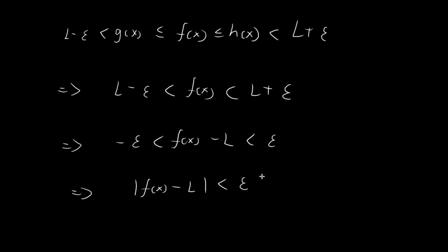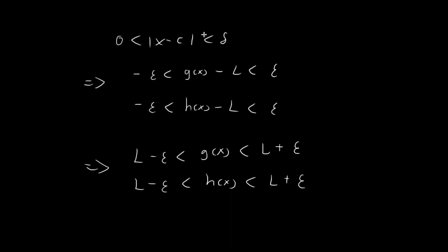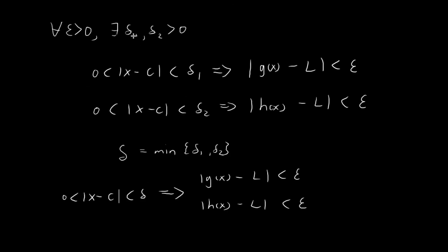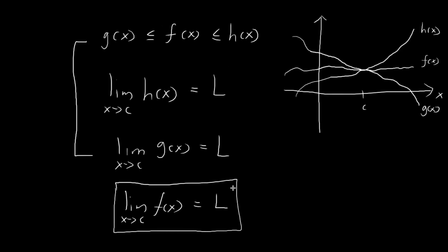This concludes our proof. We have just shown that for whatever arbitrary value of ε you come up with, we can indeed find a δ such that if |x − c| < δ, then it's implied that |f(x) − L| < ε, where δ is defined as the minimum of δ₁ and δ₂. We have essentially proved that this limit is also equal to L, provided that we have these conditions.